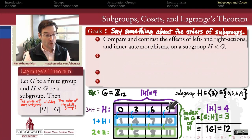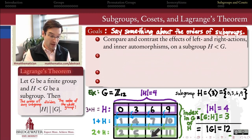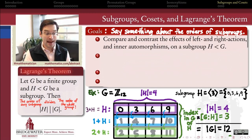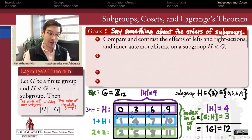We were able to move the subgroup {0,3,6,9} down to the next row by adding one, and then to the next row after that by adding one more, and we could know for sure that adding one more would get back to the original subgroup. What does that look like in the more general setting of a finite group that's not necessarily cyclic or even abelian?